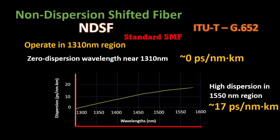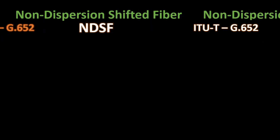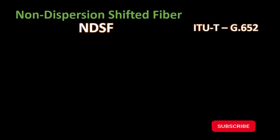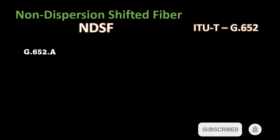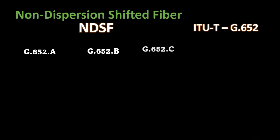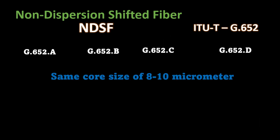The first edition of this fiber was standardized in 1984, and now it has four subcategories: A, B, C, and D. All have the same core size of 8 to 10 micrometers.